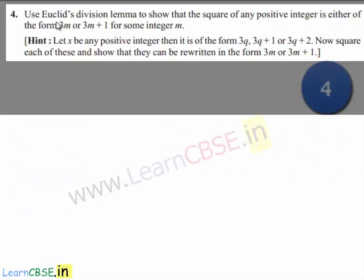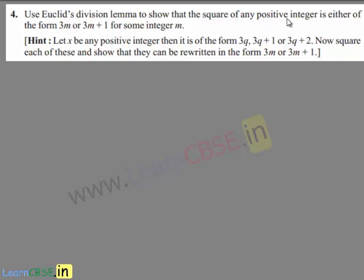Now let us move on to the fourth question. The question is: use Euclid's division lemma to show that the square of any positive integer is either of the form 3m or 3m plus 1 for some integer m. The hint given is: let x be any positive integer, then it is of the form 3q, 3q plus 1, or 3q plus 2. Now square each of these and show that they can be written in the form 3m or 3m plus 1.